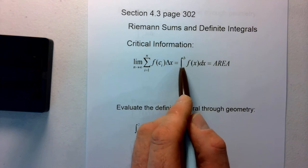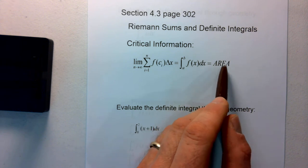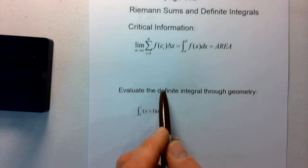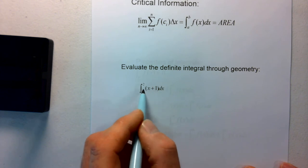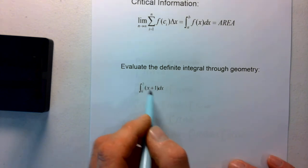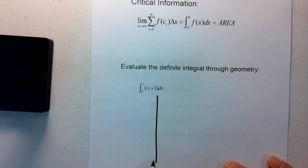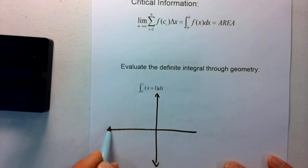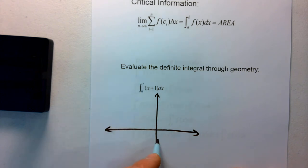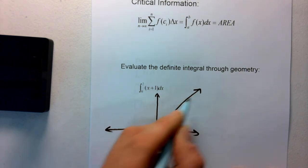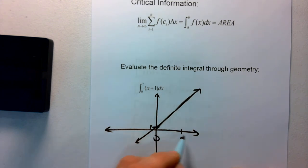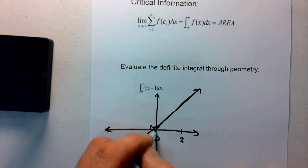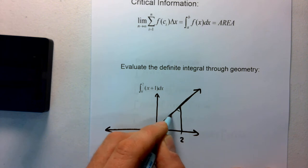So if we integrate from a to b of f(x) dx, we get the area. Can we evaluate the definite integral through geometry? We'll eventually get into non-geometric methods, but today I want to look at the geometry behind this definition. Consider the integral from 0 to 2 of x plus 1. That function goes through 1, so we're looking at the region from 0 to 2.